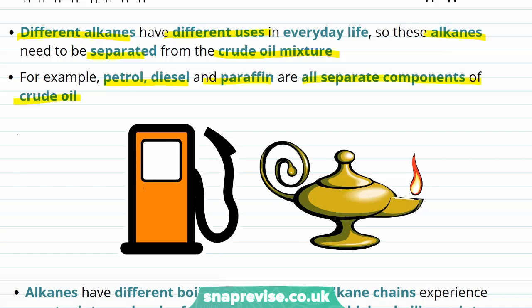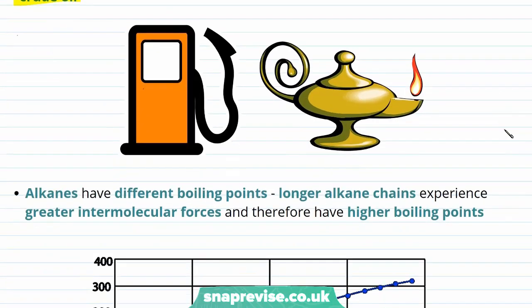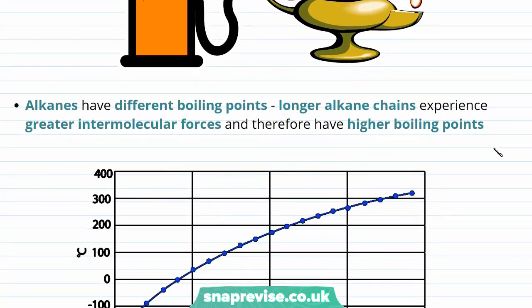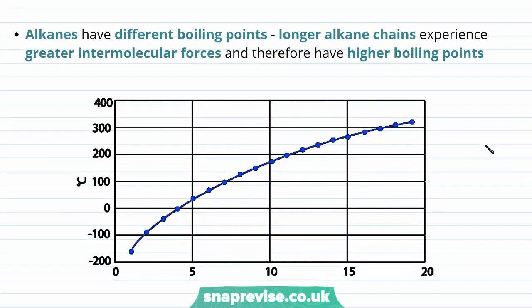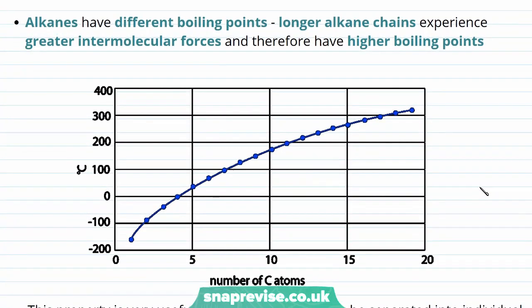While petrol, diesel, and paraffin are all fuels, they have different uses. We want to use petrol and diesel to fuel a car, but paraffin for a lamp. The crude oil mixture is separable because of the different physical properties of the different alkanes that make up the mixture.